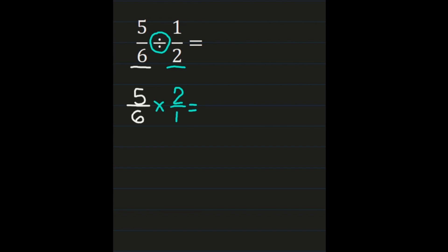So now we're ready to multiply numerator times numerator. 5 times 2 is 10. Then we're going to be multiplying denominator times denominator: 6 times 1 is 6. Now if you can leave your answer as an improper fraction, you can take the 10/6 and simplify it. For our example, though, we're going to turn it into a mixed number.